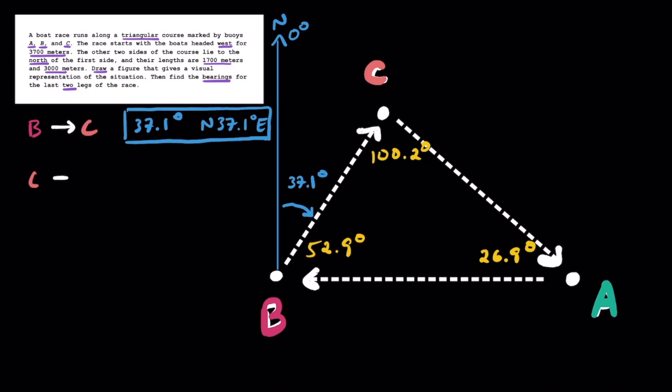Now if I'm going from buoy C to buoy A, that's the last leg of the race. Remember, we started from A, then we went to B. That was the first leg. They asked for the second two legs, so we need to go from B to C, which we just did, and we're going to find the bearing from C to A now. We need to find the bearing here, and to do that we do need a vertical line showing where our north line is relative to point C going from C to A. So our north is here, and this is going to be zero degrees.